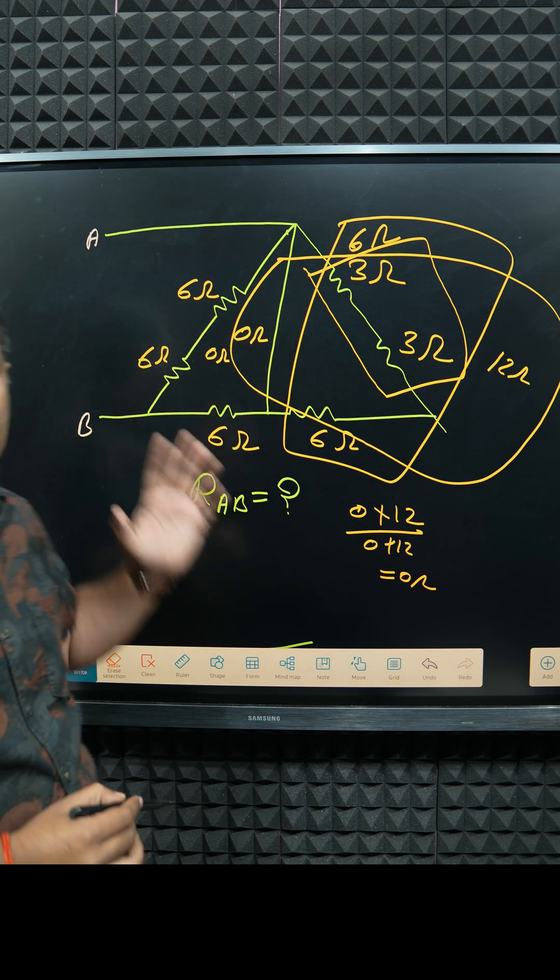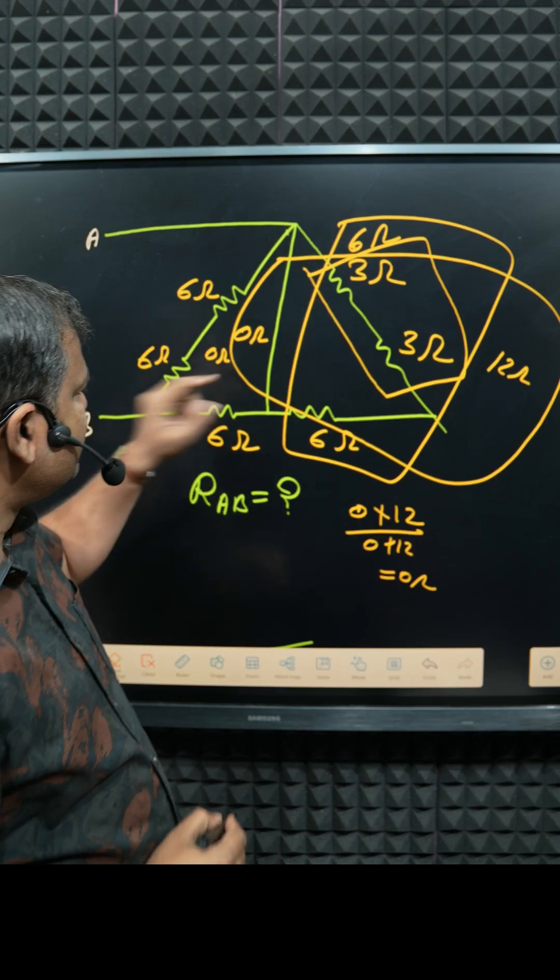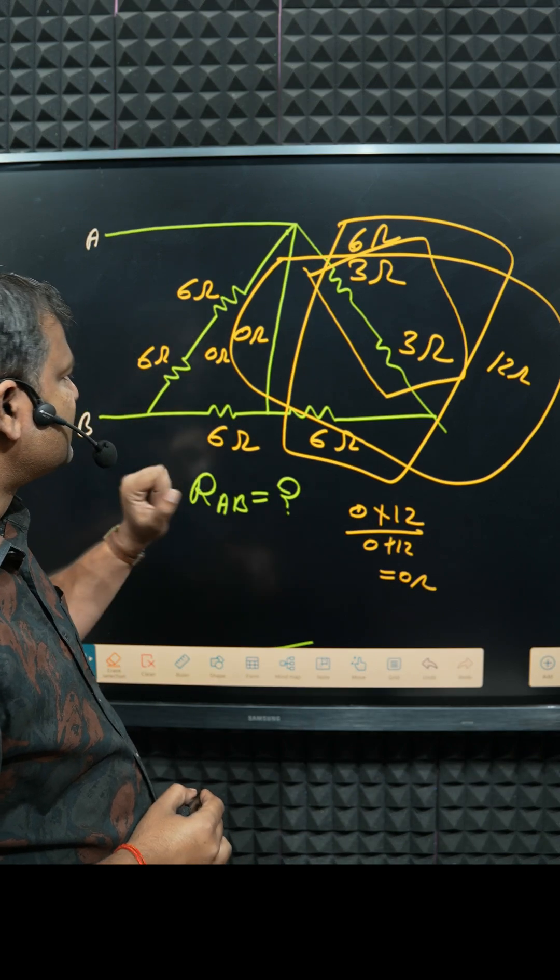Next, so if this one is 0 ohm and this one is 6, so 0 plus 6, how much? 6 ohm.